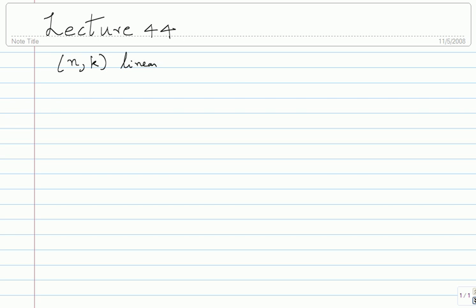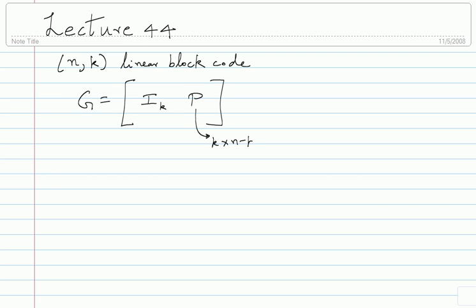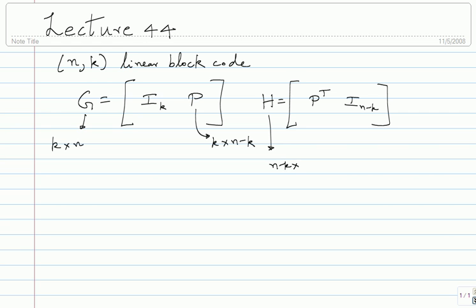Basically when you are thinking of an NK linear block code — it is called a linear block code because it happens in blocks of n bits. The most elegant way of describing it is through the generator matrix, which is systematic: IK and then a P, which is a K by N-minus-K matrix. Corresponding to this there is a description in the dual space: P-transpose, I_{N-K}. This is a K by N matrix; each row belongs to the code and is a codeword, and the row space is the entire code.